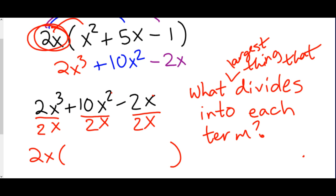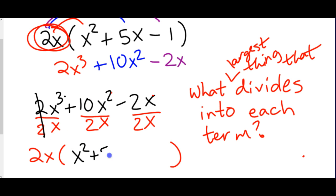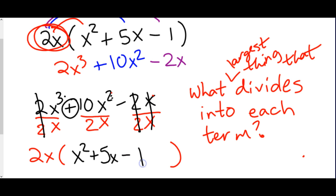We do the actual division: 2 divided by 2 is 1, x³ divided by x is x², so we have 1x² — we don't usually write the 1 in front of x. 10 divided by 2 is 5, and we keep the plus sign, so plus 5. x² divided by x is x. 2 divided by 2 is 1, and x divided by x is also 1, so we're left with a 1.